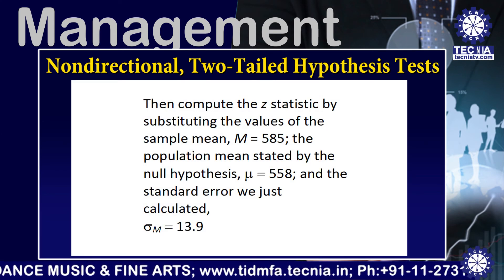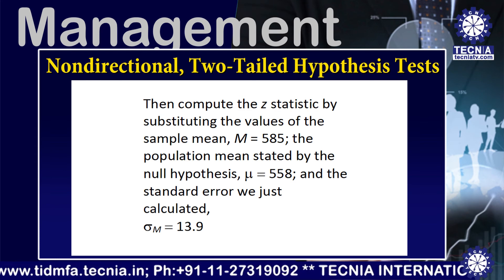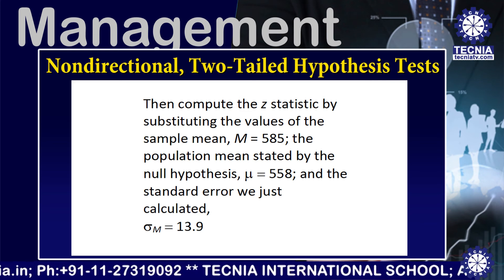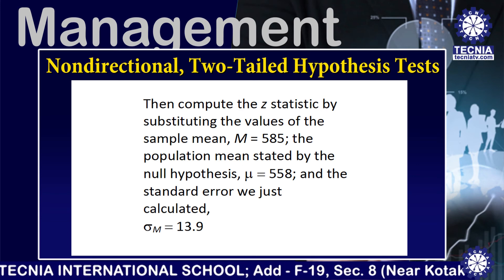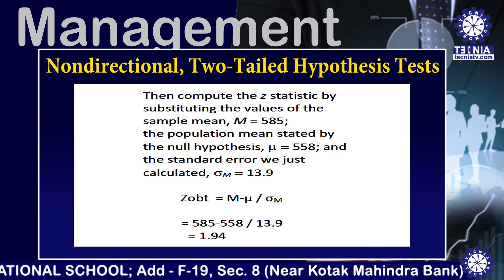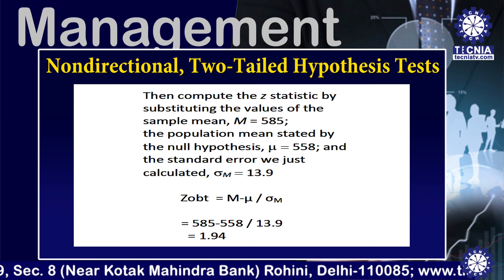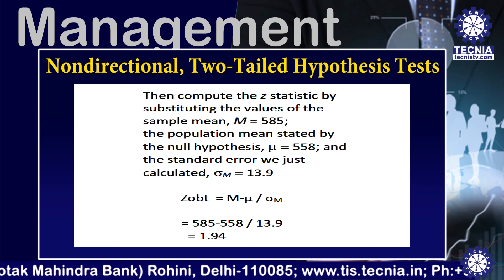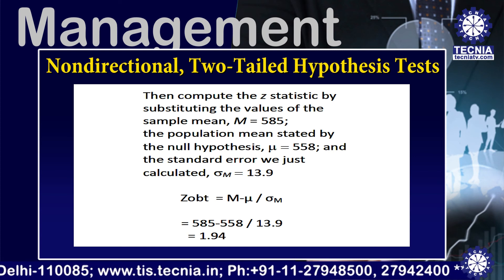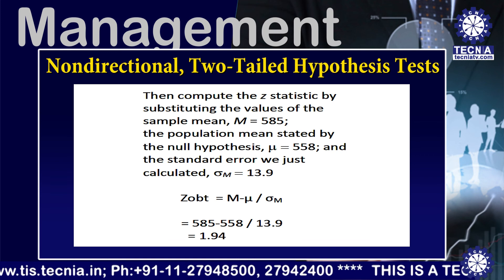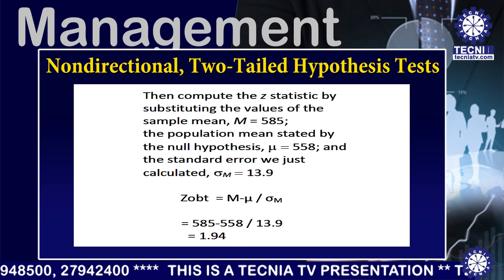We compute the Z statistic by substituting the sample mean M = 585, the population mean from the null hypothesis mu = 558, and the standard error sigma_m = 13.9. After substituting all values: Z obtained = (585 − 558) / 13.9 = 1.94.